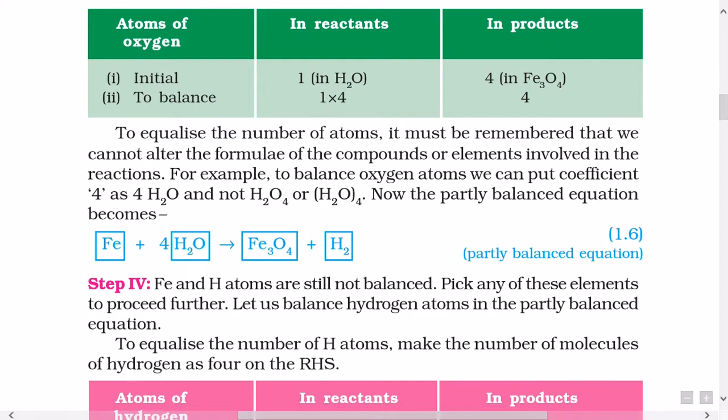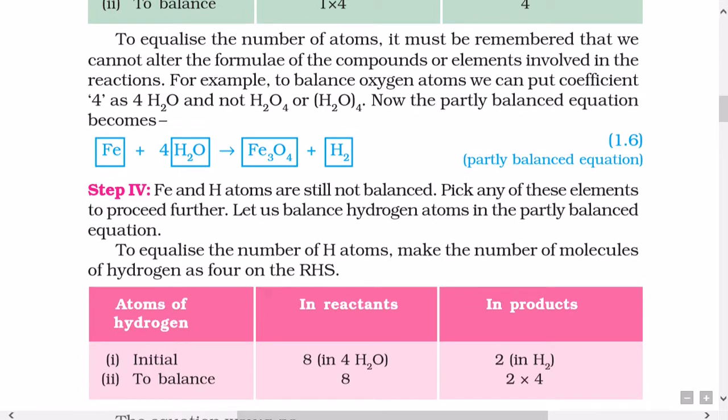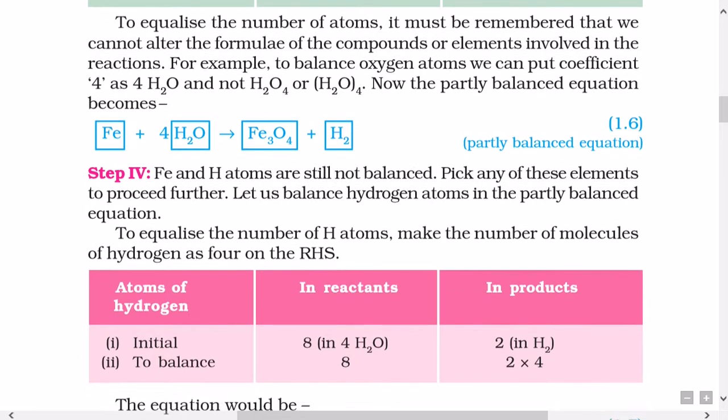to equalize the number of atoms, it must be remembered that we cannot alter the formulae of the compounds or elements involved in the reactions. For example, to balance oxygen atoms we can put coefficient 4 as 4H2O and not H2O4 or (H2O)4. Now the partly balanced equation becomes Fe plus 4H2O gives Fe3O4 plus H2. Step 4: Fe and H atoms are still not balanced. Pick any of these elements to proceed further. Let us balance hydrogen atoms in the partly balanced equation. To equalize the number of H atoms, make the number of molecules of hydrogen as 4 on the RHS.